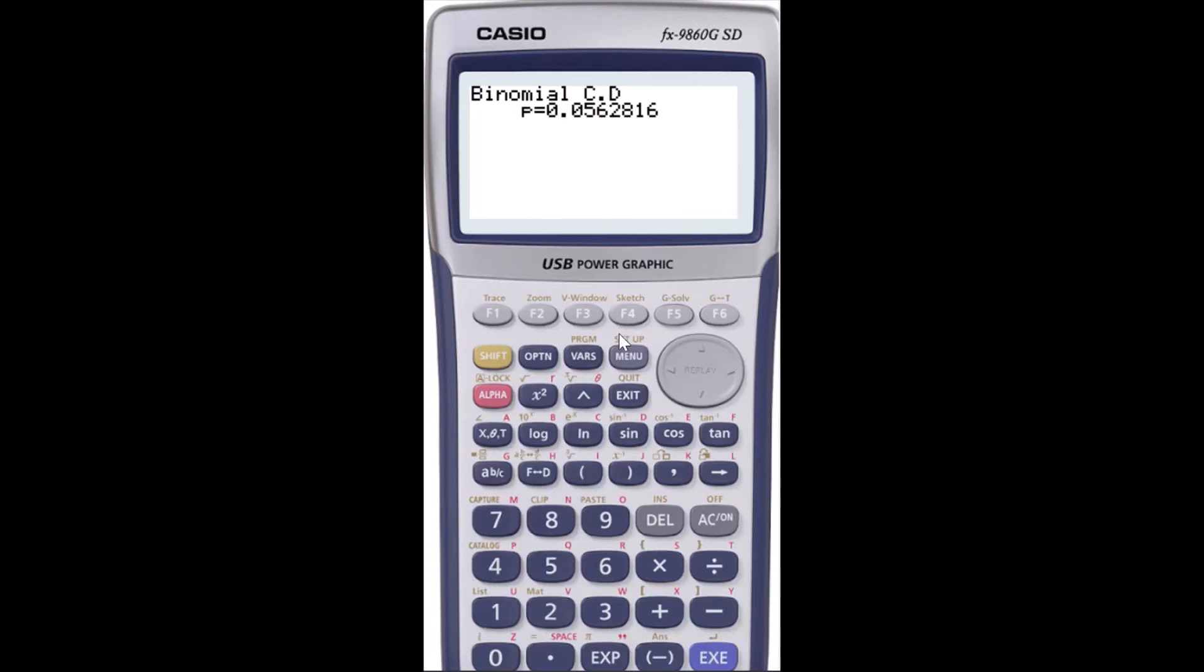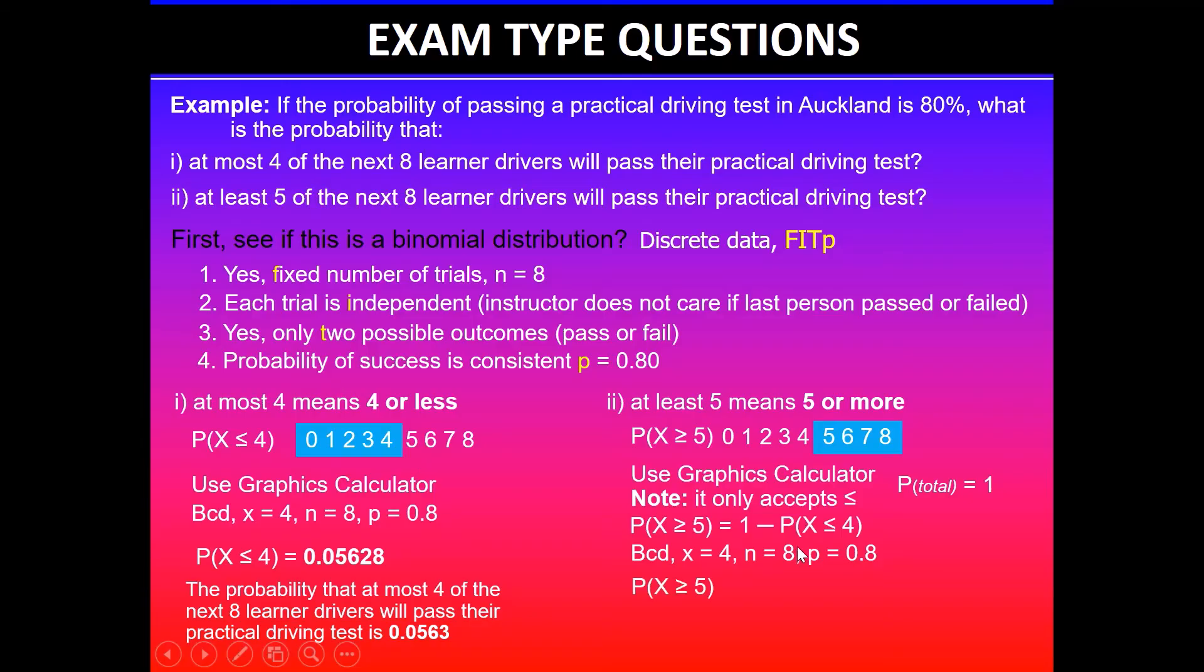Now using this information we can calculate the actual probability that we are after. Remember the question says that probability when X is greater than or equal to five. So that gives you a probability when X is greater than or equal to five is the same as one minus 0.05628. This is the probability we get on the graphics calculator when we put the X value four, n eight, and probability of 0.8. Once I've got that, then I will quickly subtract, so this is equal to 0.9437.